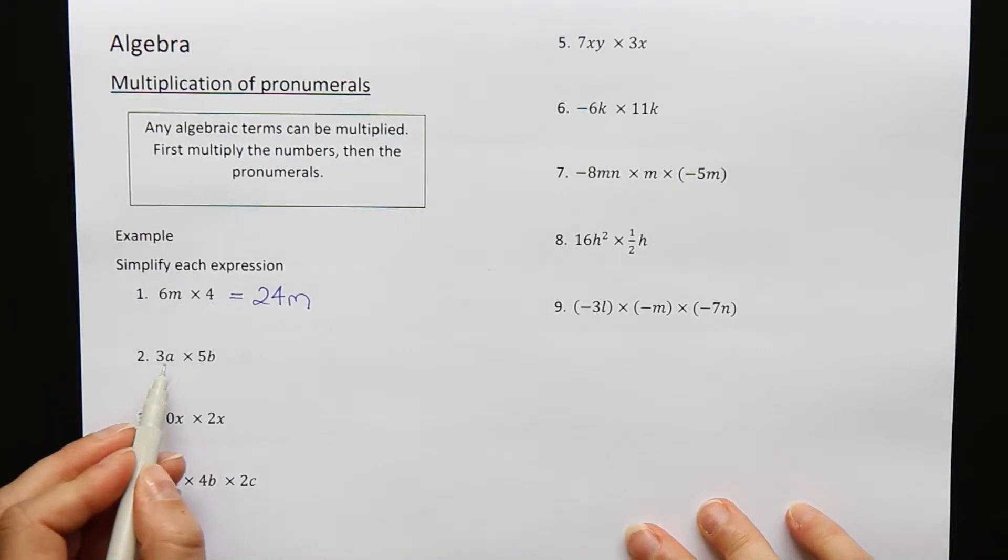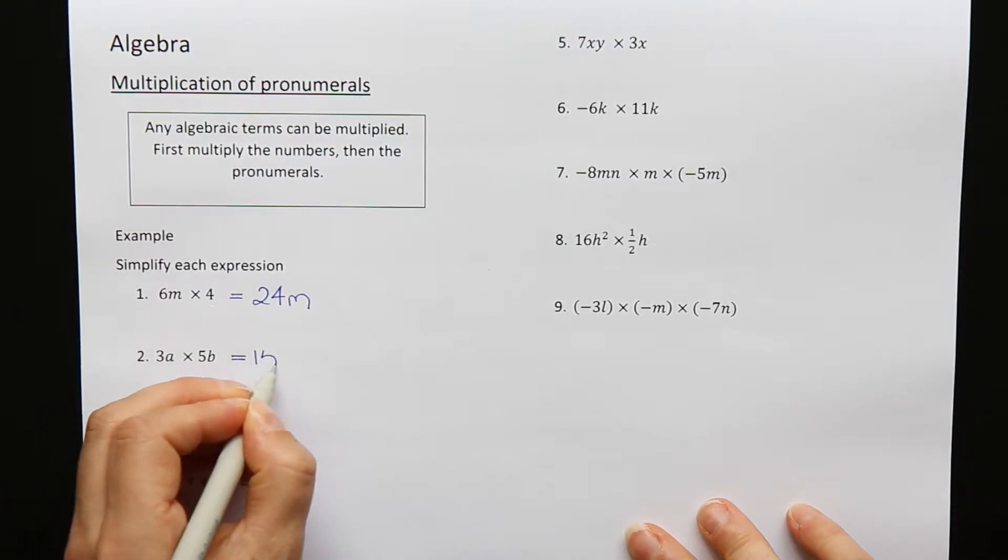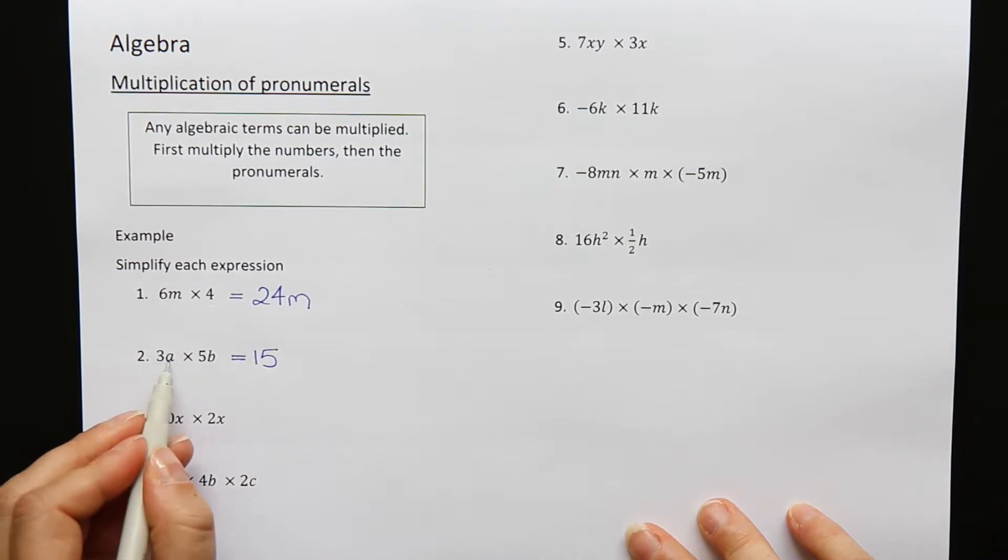Question 2: 3a times 5b. First multiply the numbers—3 times 5 is 15. I have an a and a b.